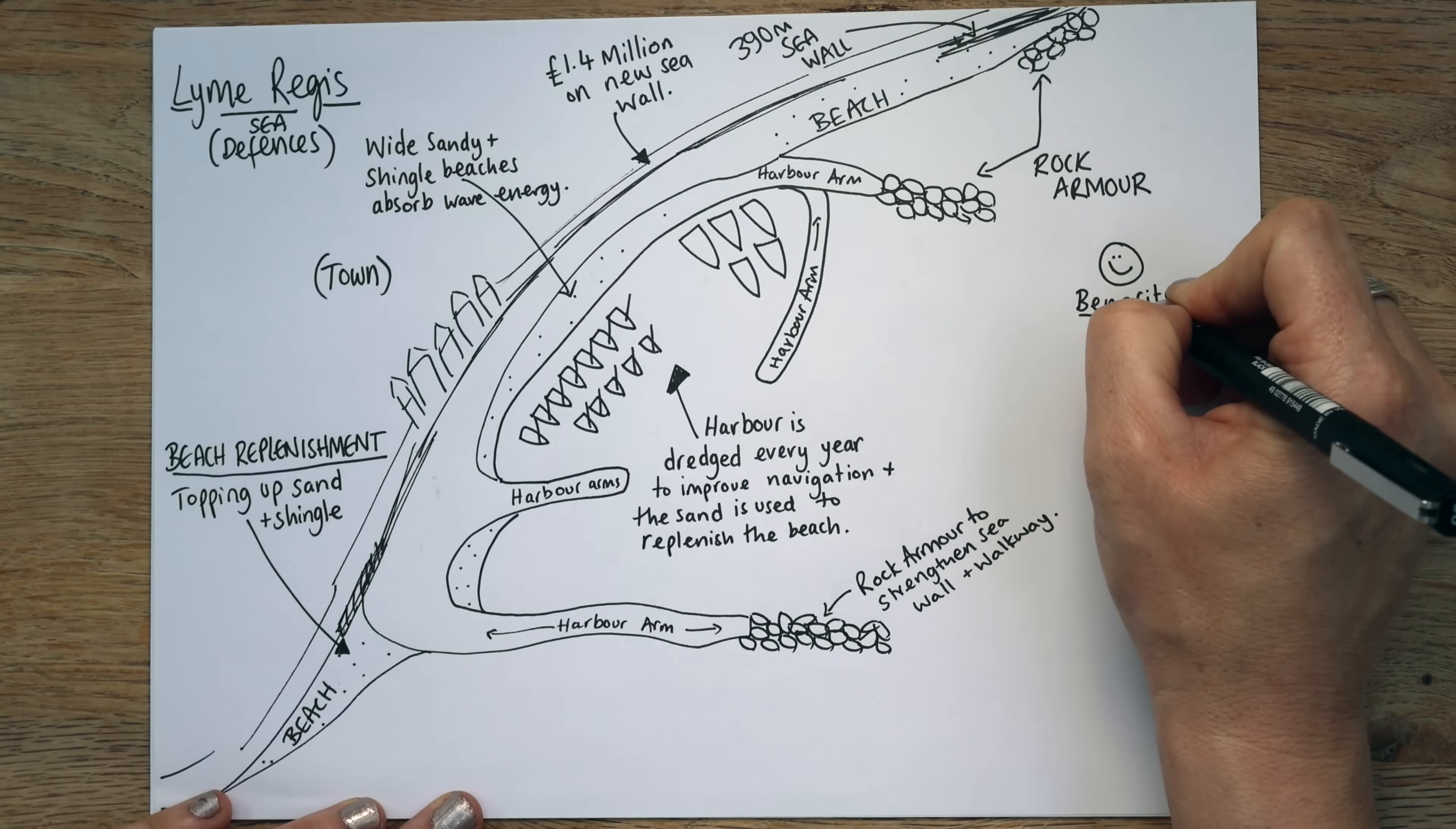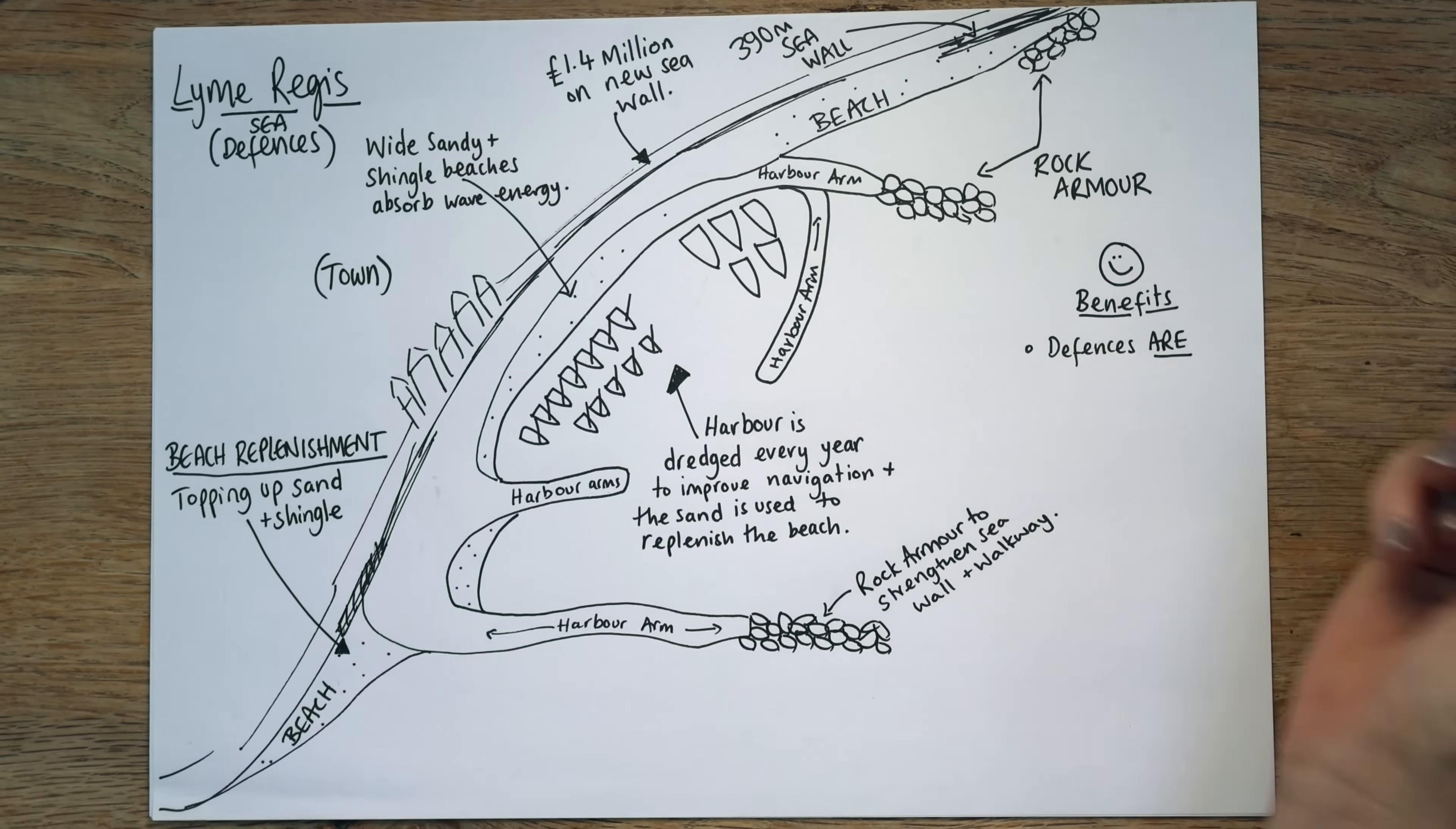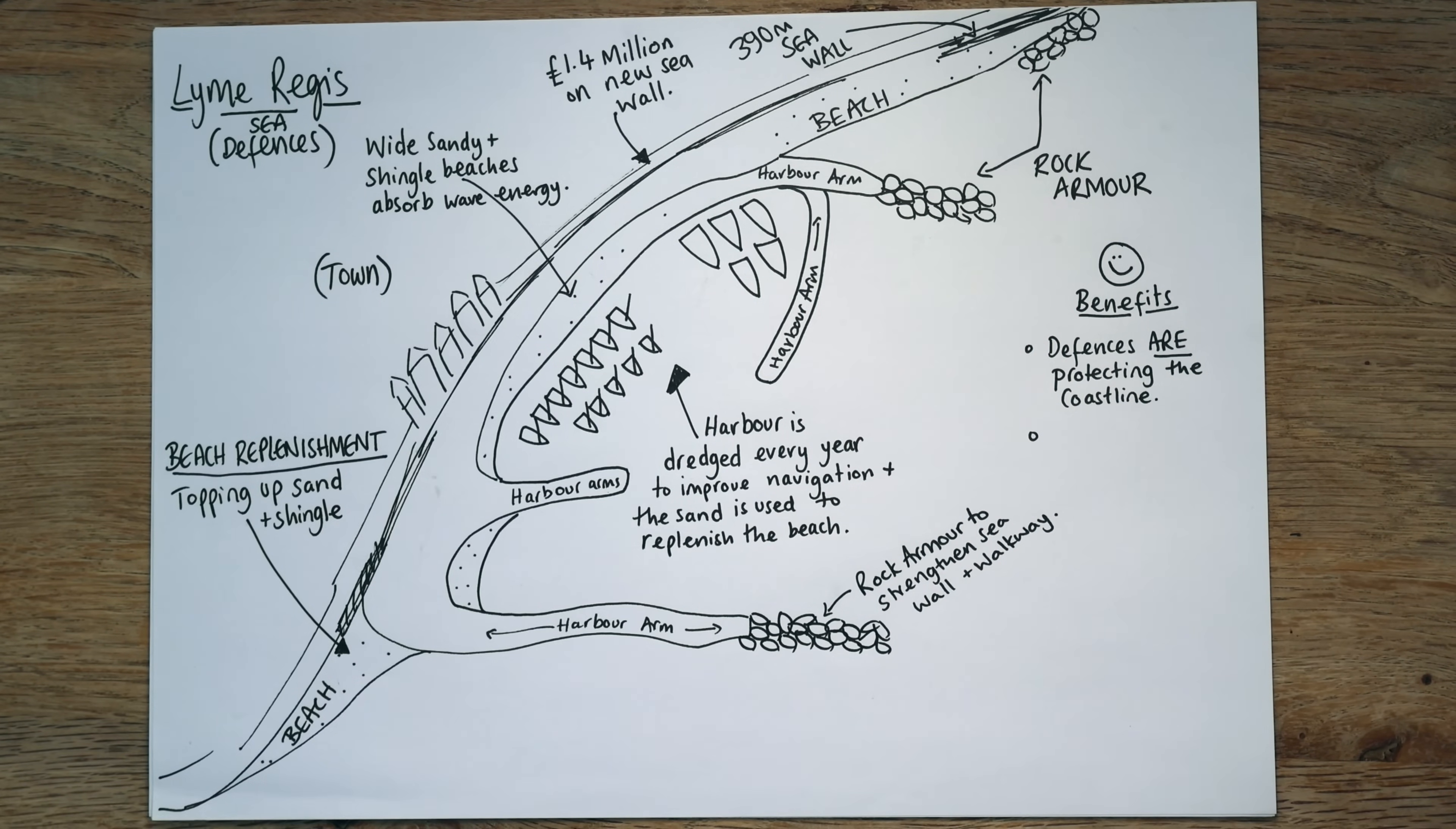So firstly, the sea wall, the rock armour, the beach replenishment, it's all working. Defences are protecting the coastline. And we know this because there's been a number of big storms since, and they've worked really well. So the defences are protecting the coastline. That's not to say they always will. They have a lifespan, might last 50, 100 years, but right now they're working.